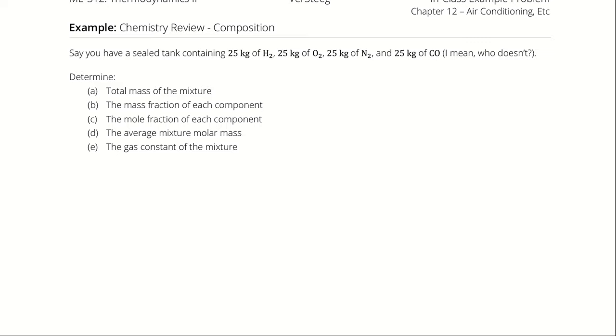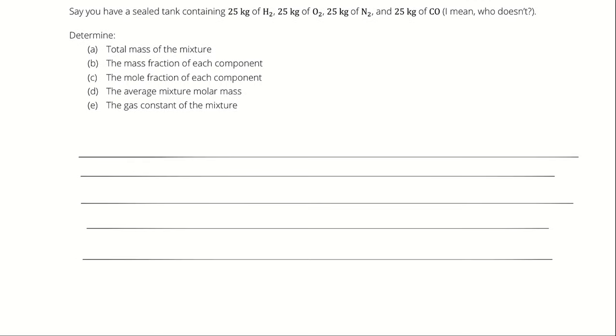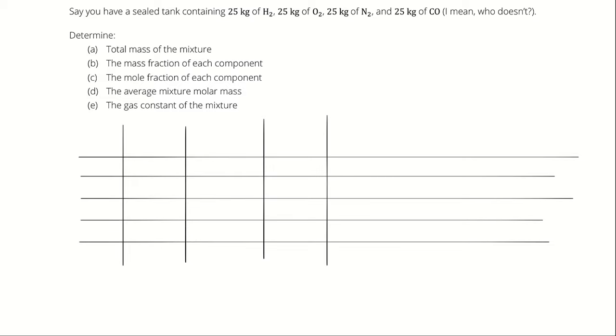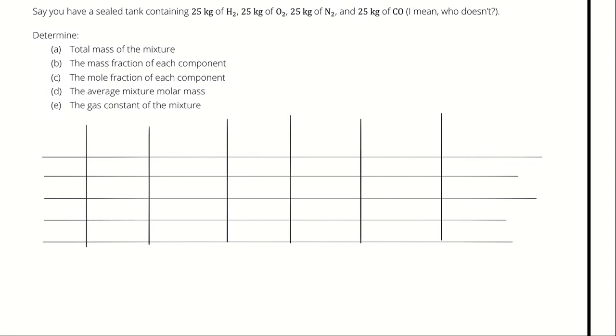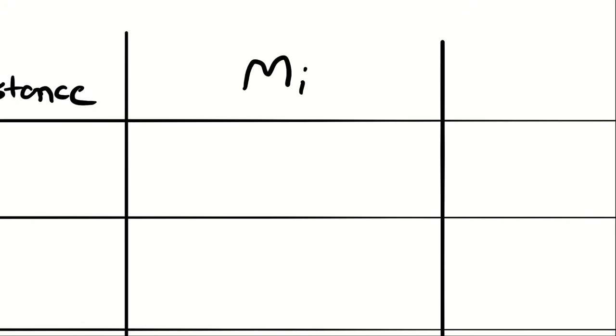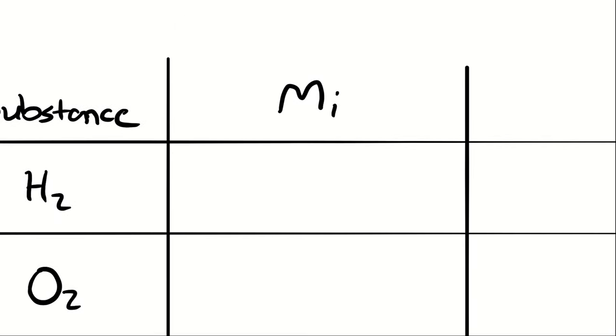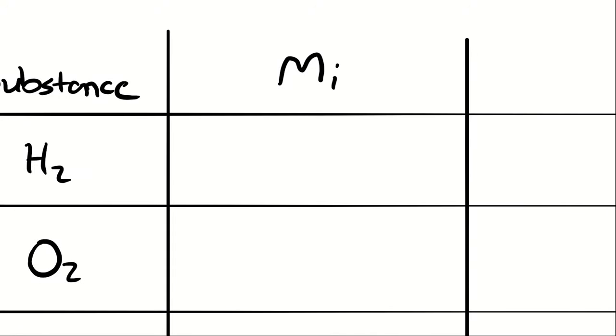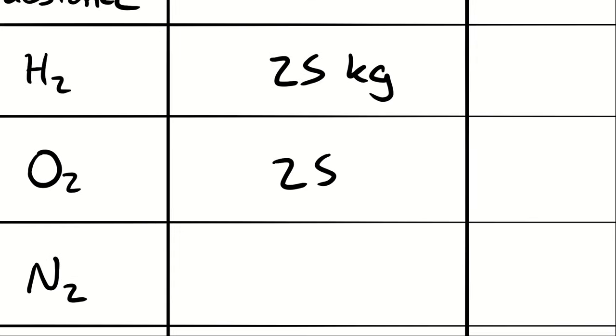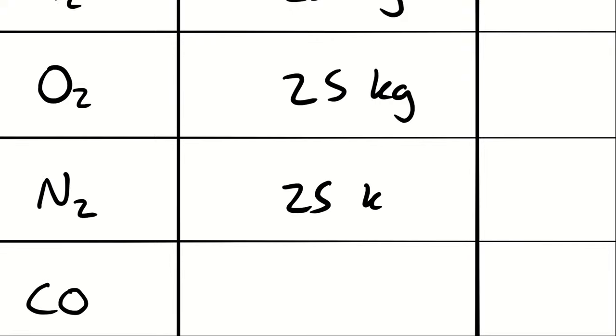To begin, I'll draw a table, as that's the most convenient way to represent all this information. We have diatomic hydrogen (H₂), diatomic oxygen (O₂), diatomic nitrogen (N₂), and carbon monoxide (CO). I'll use the subscript i to represent one of these substances or species in the mixture. The mass of each component — hydrogen, oxygen, nitrogen, and carbon monoxide — is 25 kilograms.